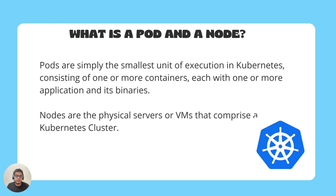Next, what is a pod and a node? A pod is the smallest or most basic deployable object in a Kubernetes cluster, representing a single instance of a running process. A pod can have one or multiple containers, but in regular cases it is only one Docker container. A node is a worker machine in Kubernetes — either virtual or physical — managed by the control plane. A node can have multiple pods, and the Kubernetes control plane automatically handles scheduling and auto-healing of pods across the cluster.